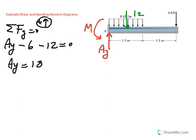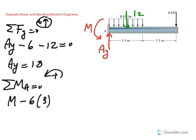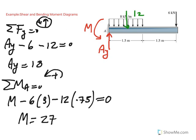Then we go ahead and figure out the moment reaction by taking moment about A, taking counterclockwise to be positive. So start with the unknown moment reaction M. The moment of six is going to be 6 times 3, going negative clockwise, and then 12 also going negative times 0.75 because you have to put it right in the middle of 1.5. So the moment reaction becomes 27 kilonewton meters.